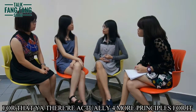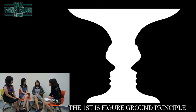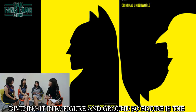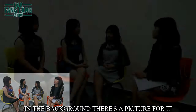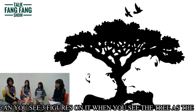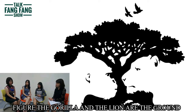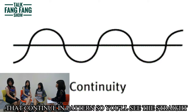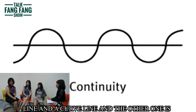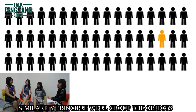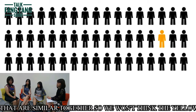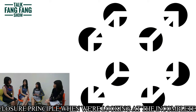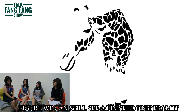Is it part of the Gestalt laws of perceptual organization? Yes, there are actually four more principles. The first is the figure-ground principle: when we perceive an image, we simplify it by dividing it into figure and ground — the figure is the object we focus on, and the ground is everything in the background. For example, when you see the tree as the figure, the gorilla and the lion become the ground. The second is the continuity principle: we group objects that continue in a pattern, such as a straight line or curved line. The third is the similarity principle: we group objects that are similar together. The fourth is the closure principle: even when looking at an incomplete figure, we can still perceive a finished unit.